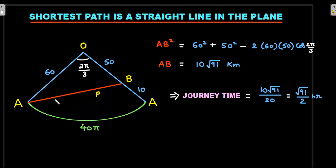We are calculating the length of this AB line which is the shortest distance. It's a straight line. Any other path would be curved and would be longer. To get AB, I'll use cosine rule in triangle AOB. AB² = AO² + OB² - 2·AO·OB·cos(2π/3). Cos(2π/3) is -1/2, so this becomes plus. When you solve, AB comes out to be 10√91. Therefore, the shortest journey time is 10√91 divided by 20 kmph, which gives √91 by 2.